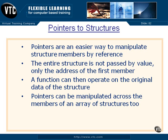Pointers can be manipulated across the members of an array, just like we saw with pointers to arrays previously. When you increment a pointer pointing to an array of structures, it goes to the next structure in the array. Rather than skipping forward a few bytes like an integer, if a structure is 50 or 60 bytes, the compiler knows what the pointer points to and increments it the appropriate number of bytes through memory.